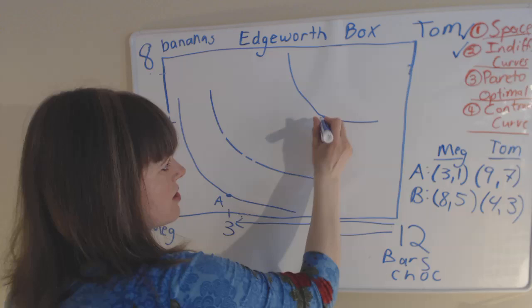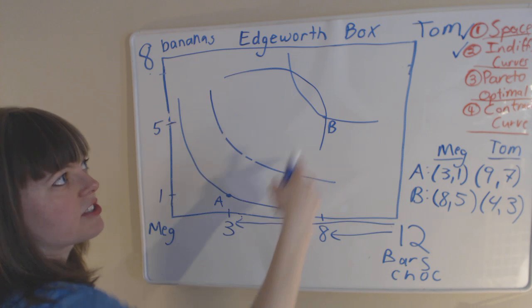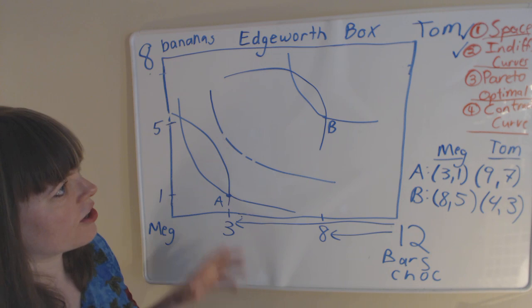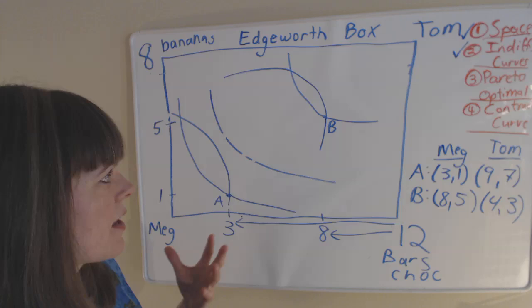So Tom's indifference curve through B might look something like this, which you can see has an indifference curve shape from Tom's perspective. And his indifference curve through A might look something like that. So now we have indifference curves on this map from the two people's perspectives.